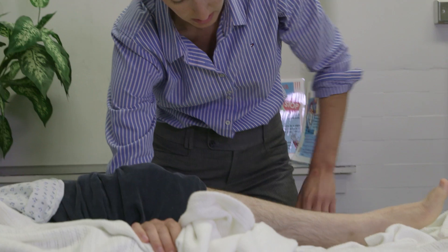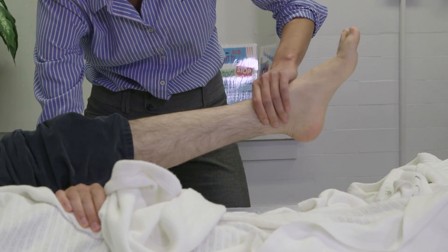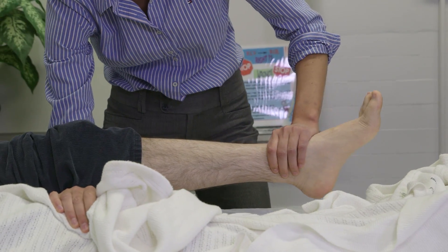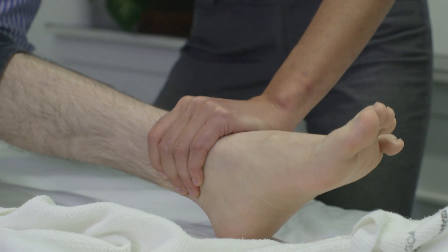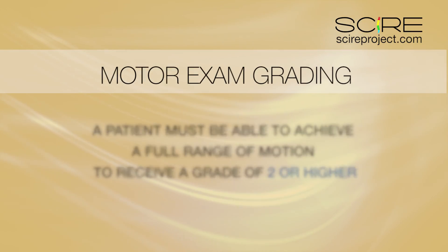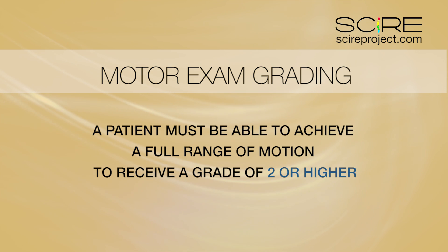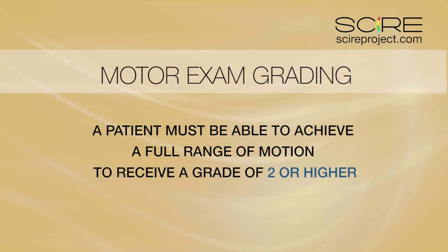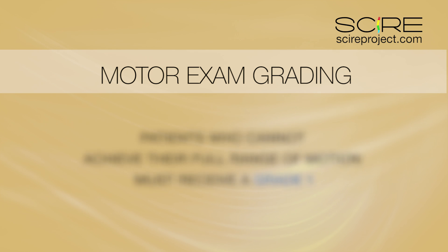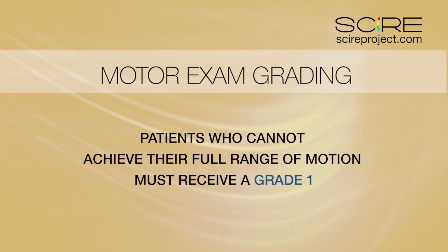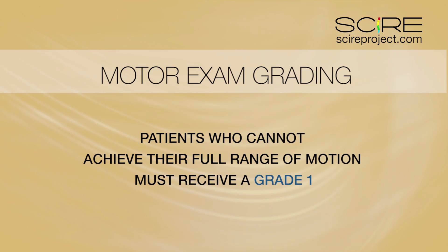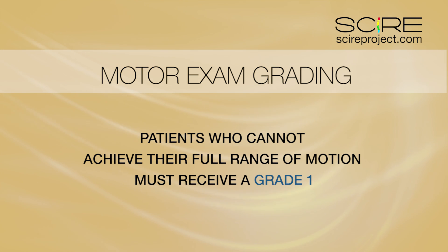This makes it more likely that two testers doing the ISNCSCI exam will record the same score for assessment of the same muscle. Another difference in ISNCSCI muscle testing requires that the patient achieve full range of motion to receive a score of 2 or greater. This means that any patient who cannot achieve full range of motion against gravity or in a gravity-eliminated position must receive a grade of 1 out of 5.